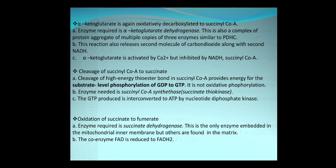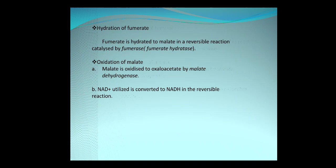The GTP produced is interconverted to ATP by nucleotide diphosphate kinase. The succinate formed is converted to fumarate by succinate dehydrogenase — the only enzyme embedded in the inner mitochondrial membrane — and the coenzyme for this is FAD, which is reduced to FADH2. Next, the fumarate formed is hydrated to malate in a reversible reaction catalyzed by fumarase, and the malate is then oxidized to oxaloacetate by malate dehydrogenase, which requires the cofactor NAD+, converting it to NADH in an irreversible reaction.